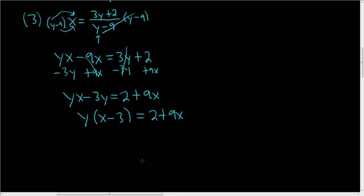To finish, we'll just divide both sides by x minus 3. These cancel. So y equals 2 plus 9x divided by x minus 3.